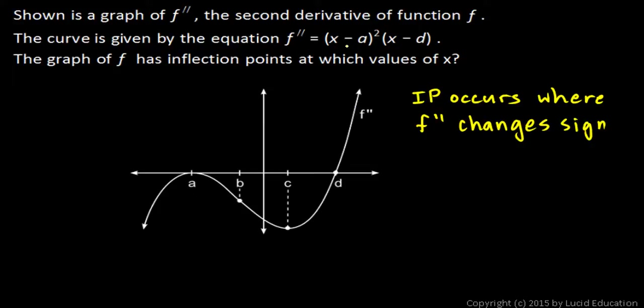And you can also see that the factor x minus a has a multiplicity of two. And wherever there is an even multiplicity, the curve touches the graph without crossing it. And x minus d right there has a multiplicity of one. And wherever the multiplicity is an odd number, the graph crosses the axis.